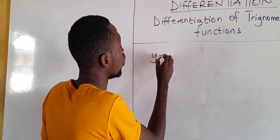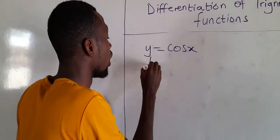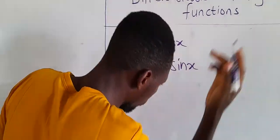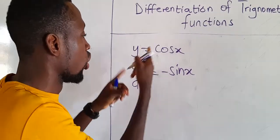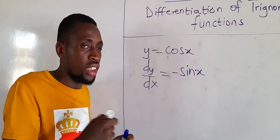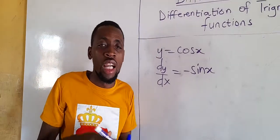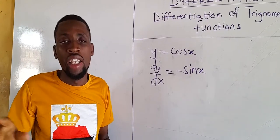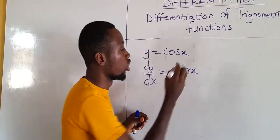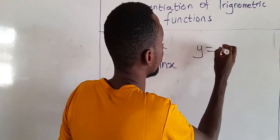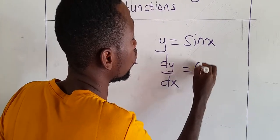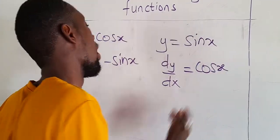So we say if y is equal to cos x, remember, dy/dx is equal to negative sin x. Also, if y is equal to sin x, then our dy/dx is equal to cos x. If you have not watched the video on this, please go to YouTube and search for it. I know you are impressed with this.